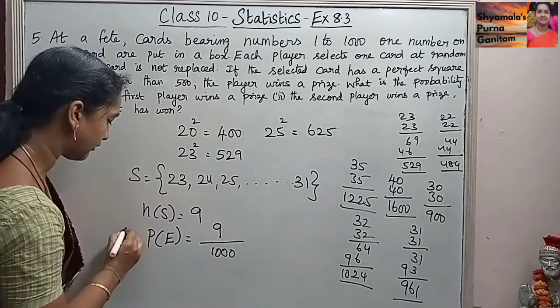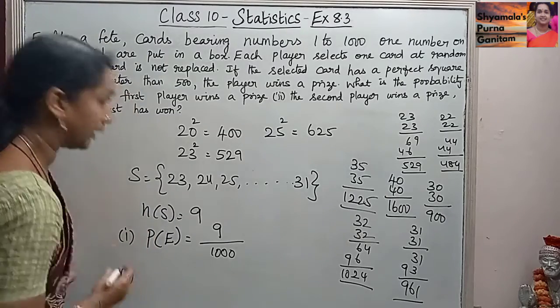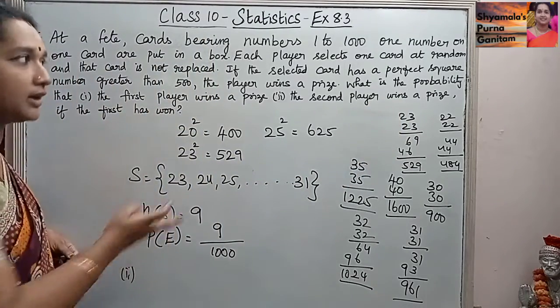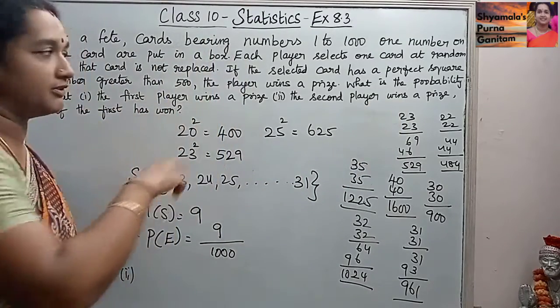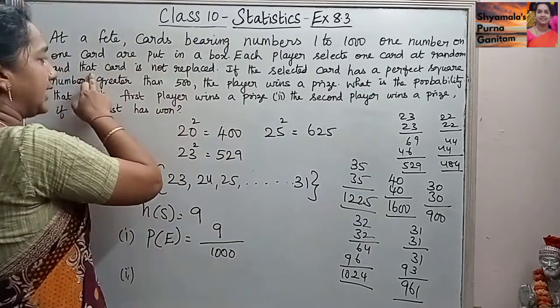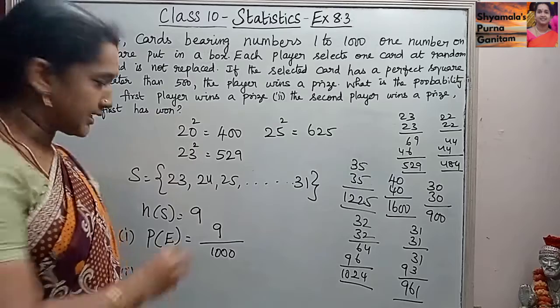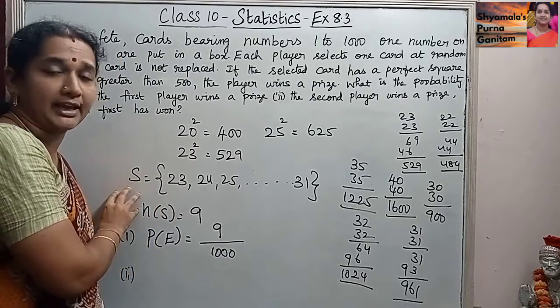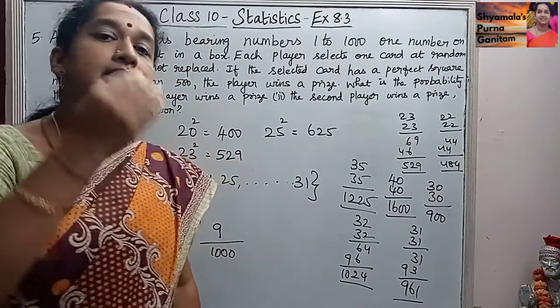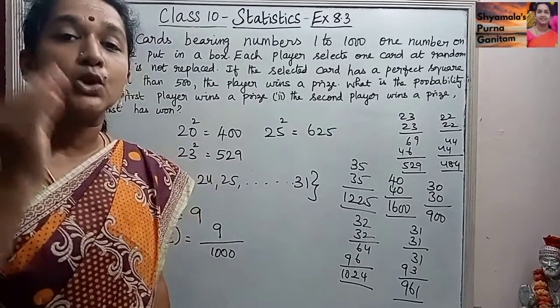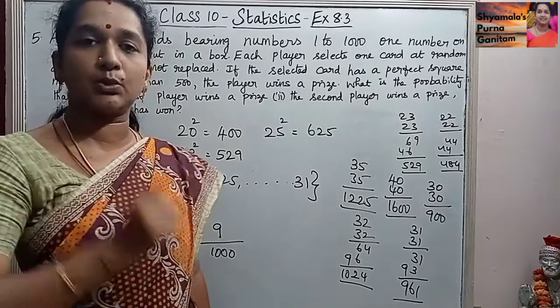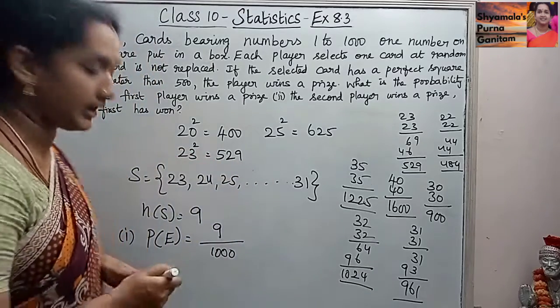The second one is the second player wins a prize if the first has won. For that, a condition is given: each player selects one card at random and that card is not replaced. So if the person who is taking the card and winning the prize, that card is not replaced. So the number of cards remaining is 1000 minus 1, 999 cards only will be there.